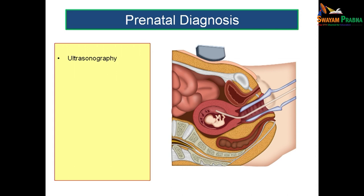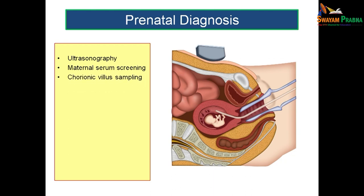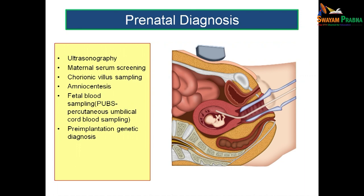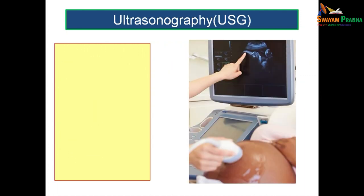The methods used for prenatal diagnosis include ultrasonography, maternal serum screening, chorionic villus sampling, amniocentesis, fetal blood sampling (also known as percutaneous umbilical cord blood sampling), pre-implantation genetic diagnosis, and cardiotocography. These are the main methods used to assess fetal development.